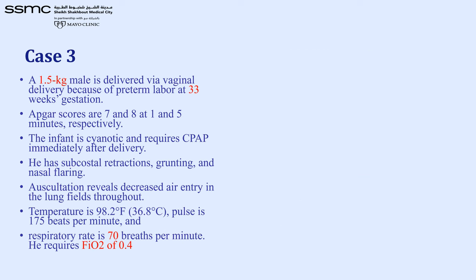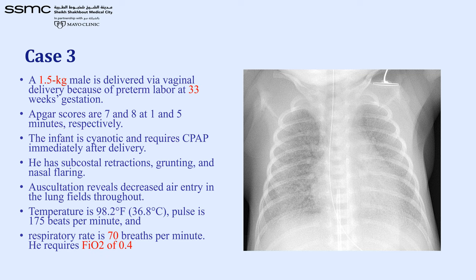Case 3: A 1.5 kg premature baby — always consider respiratory distress syndrome first. The infant became cyanotic, required CPAP, had subcostal retraction and grunting, temperature 36.8°C, fast breathing, and FiO2 40%. The X-ray is typical of respiratory distress syndrome. It is not that difficult to perform the basic workup and management in these babies.